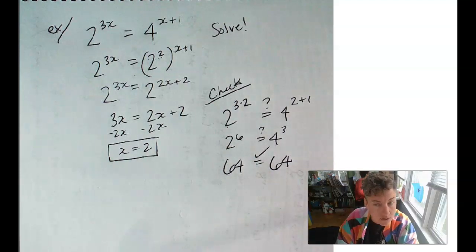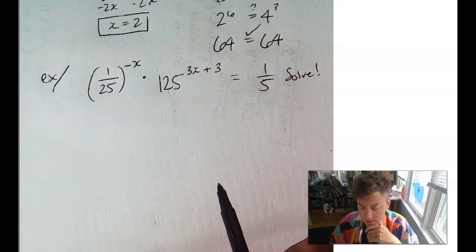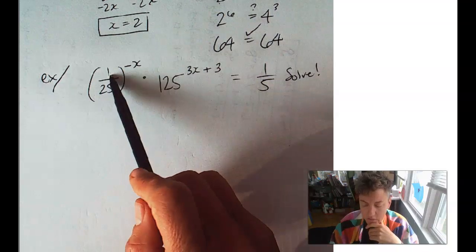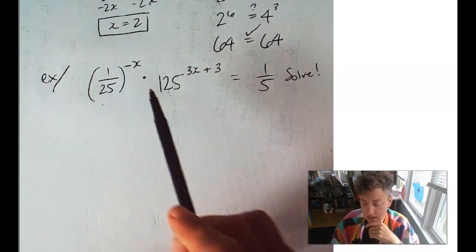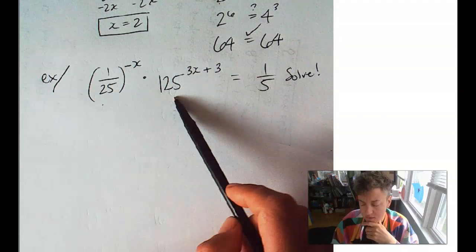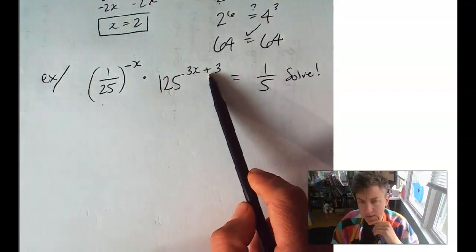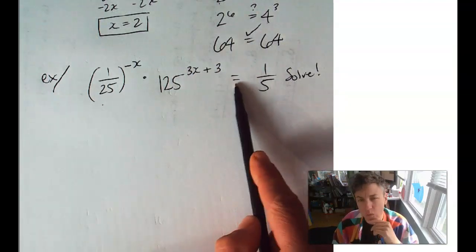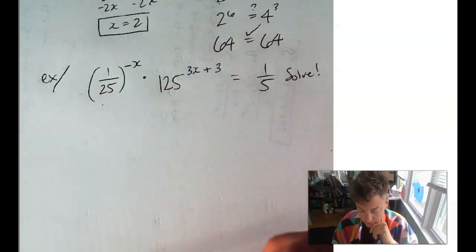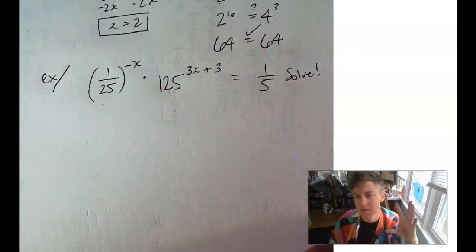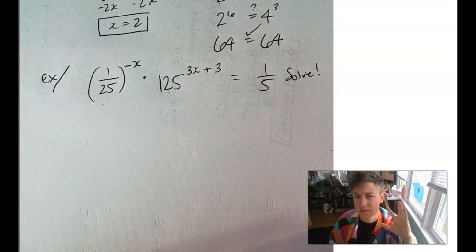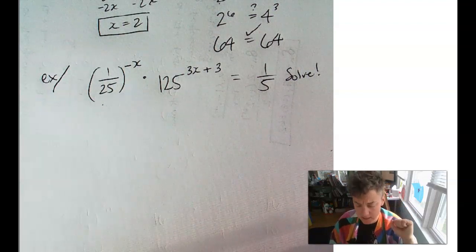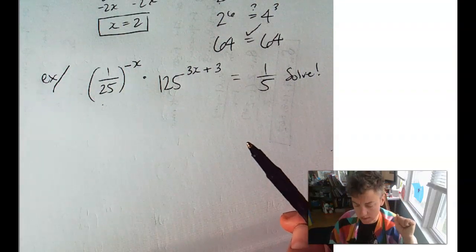Let's do another one, shall we? Alright, check out this beauty. We've got 1/25 to the negative x times 125 to the 3x plus 3 equals 1/5. First things first, we've got to find a common base. So, what do we see here?